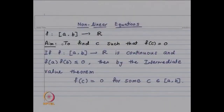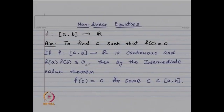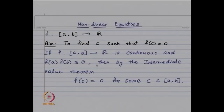Our setting is: f is a function defined on closed interval [a, b] taking real values. Our aim is to find c such that f(c) = 0. If the function f is continuous and f(a)·f(b) ≤ 0, then f(a)·f(b) = 0 means either f(a) = 0 or f(b) = 0. If it is strictly less than 0, then f(a) and f(b) are of opposite sign, and by the intermediate value theorem, f(c) = 0 for some c in [a, b]. So if f(a)·f(b) ≤ 0, we know the root of f lies in [a, b].